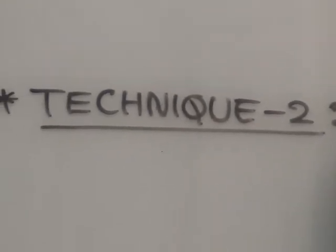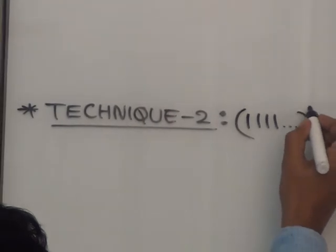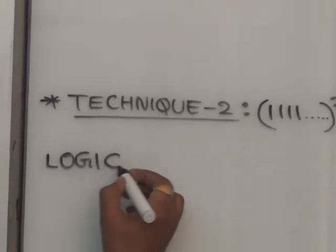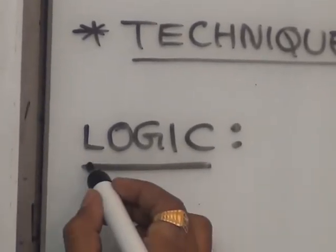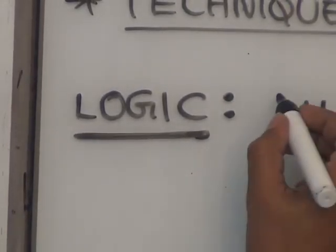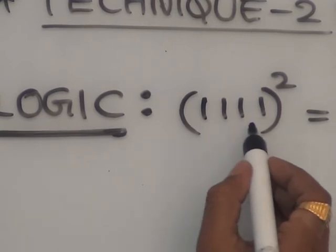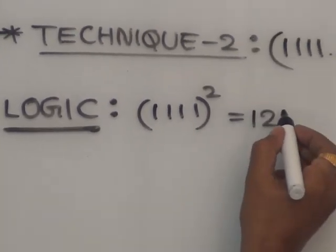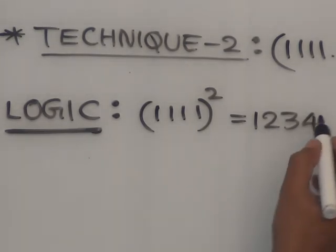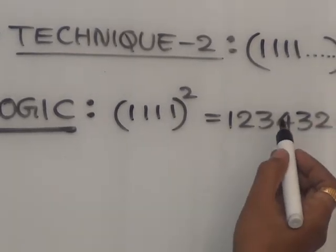Technique 2 — so the logic — only once, very simple approach. Jagritika — logic remaining values calculate. 1111 whole square — so how many ones are there? 4 ones. So start from 1 and write up to 4.